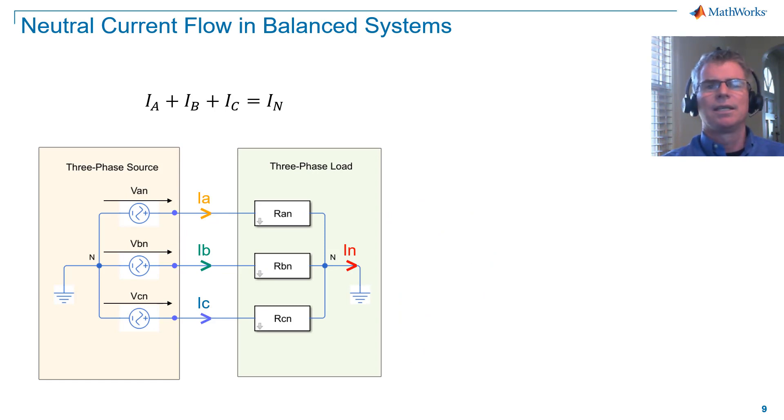We'll now consider what happens in the connection between the neutral points in a balanced system. Kirchhoff's current law dictates that the vector sum of all currents entering a node must equal the vector sum of all currents exiting that node. In other words, the neutral current is equal to the vector sum of the line currents.